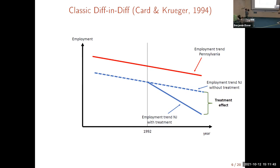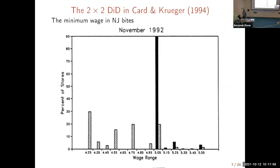We compare the difference after the change between a treated group and a control group relative to the difference before that change. What they show in the paper is the distribution of wages in New Jersey versus Pennsylvania after the introduction of the minimum wage. The minimum wage was just over $5 an hour. The light bars are Pennsylvania, the dark ones are New Jersey. You can clearly see some bunching where the minimum wage bites — there are no observations below it, and some above. It clearly shows the minimum wage had a bite.